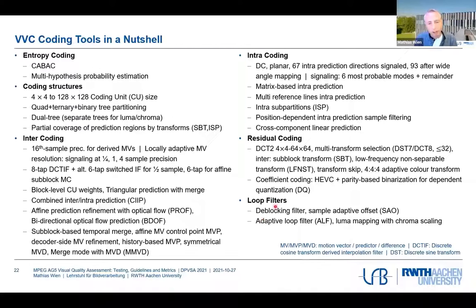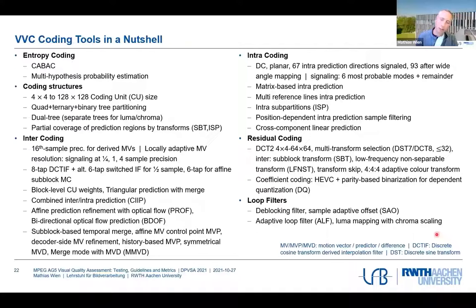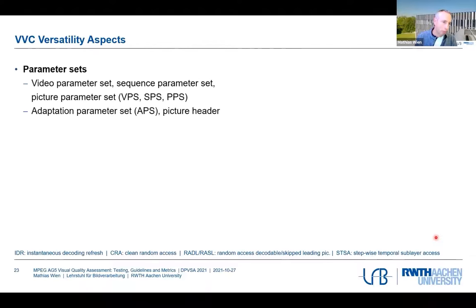For loop filters: the de-blocking filter introduced in AVC is still there, further developed compared to HEVC. SAO (sample adaptive offset) was already in HEVC, and new additions are the adaptive loop filter and luma mapping with chroma scaling (LMCS). LMCS came from the context of HDR video coding but was found useful for standard dynamic range video as well. There are many more things — last year Benjamin Bross from HHI and I gave multi-hour tutorials on VVC at several conferences.